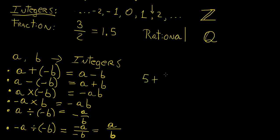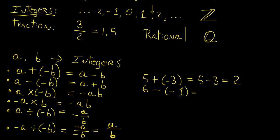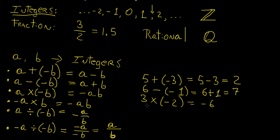Let's say you have 5 plus minus 3. You're essentially just going to subtract that 3 from the 5, so you get 5 minus 3, which is 2. For this case, let's say we have 6 minus minus 1. Remember, you're going to multiply the signs together — that's going to become a plus sign, and this becomes 7. For the next operation, say you have 3 times minus 2. If you don't see a positive or negative sign in front of a number, it just implies it's positive. So 3 times minus 2 is minus 6. Similarly, minus 3 times 2 is also minus 6.